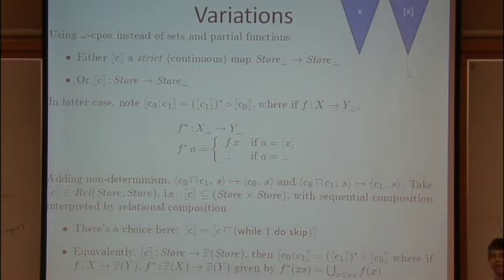So an equivalent to this relational semantics instead of saying that the meaning of a command is a relation between stores and stores, just as with the deterministic language I went from partial functions to continuous functions from stores to stores lifted, we can do something which looks quite similar in giving the semantics of this non-deterministic language, this angelic semantics. So I can take the meaning of a command to be a function from stores into the power set of stores.